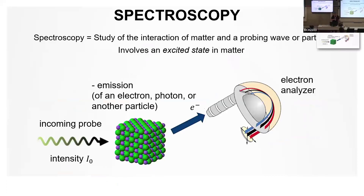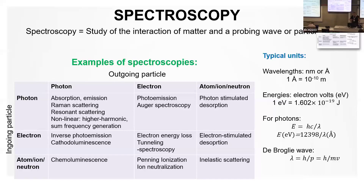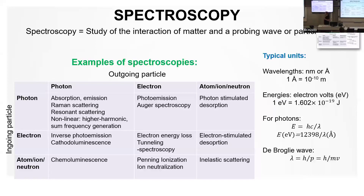Alternatively, what can happen is that we create other types of secondary particles that emerge from the system — for example, photoelectrons that are measured with photoelectron spectroscopy. Combining these kinds of things, we can send in different probes and look at different things that happen. This creates a myriad of different spectroscopies, and this is still a limited view — there are a lot of different secondary spectroscopies that exist.